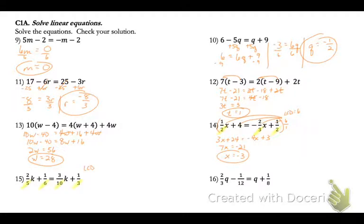Number 15, we can use the same method. So our denominators 5, 6, 10, and 3 have a least common denominator of 30. So I'm going to multiply every part of this equation by 30 over 1. So that will be 2 fifths times 30 is 12k. 1 sixth of 30 is 5. 3 tenths of 30 is 9k. And then 1 third of 30 is 10. Now I'm going to subtract my 9k. So I get 3k equals 5. So k will equal 5 thirds.